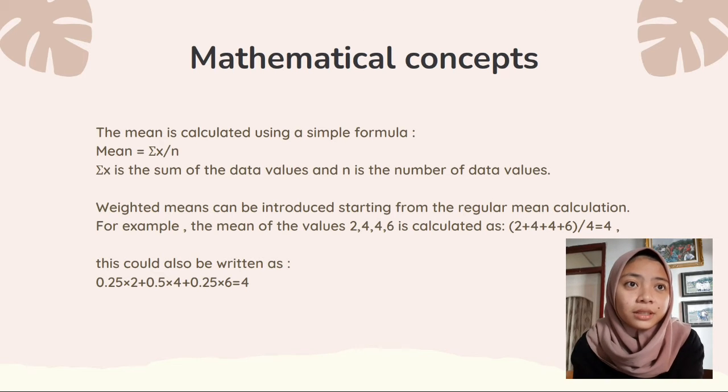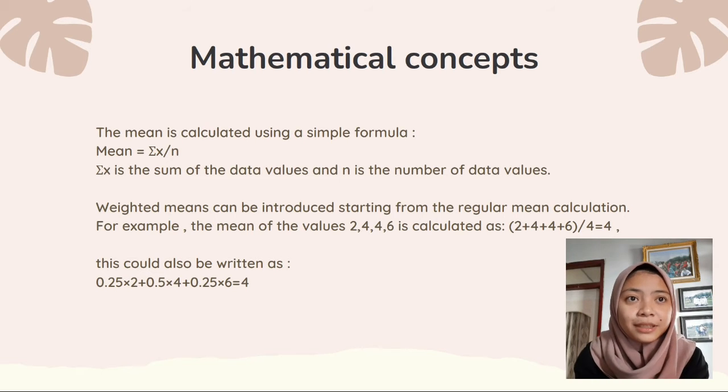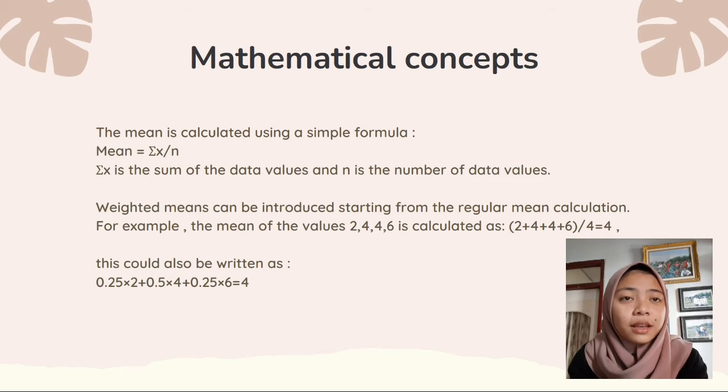Weighted mean can be introduced starting from the regular mean calculation. For example, the mean of the values 2, 4, 4, 6 is calculated as (2+4+4+6)/4 = 4. This could also be written as 0.25×2 + 0.5×4 + 0.25×6 = 4.